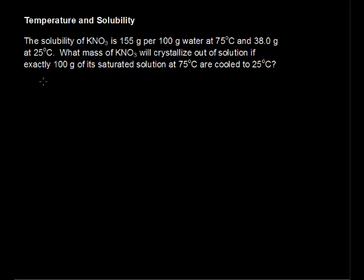So we are starting with 75 degrees Celsius. And we start with this total mass of 100 grams. Now, that 100 grams includes both the KNO3 plus the water. So what we're going to do here is determine how much of the KNO3 is initially present and how much water is initially present.